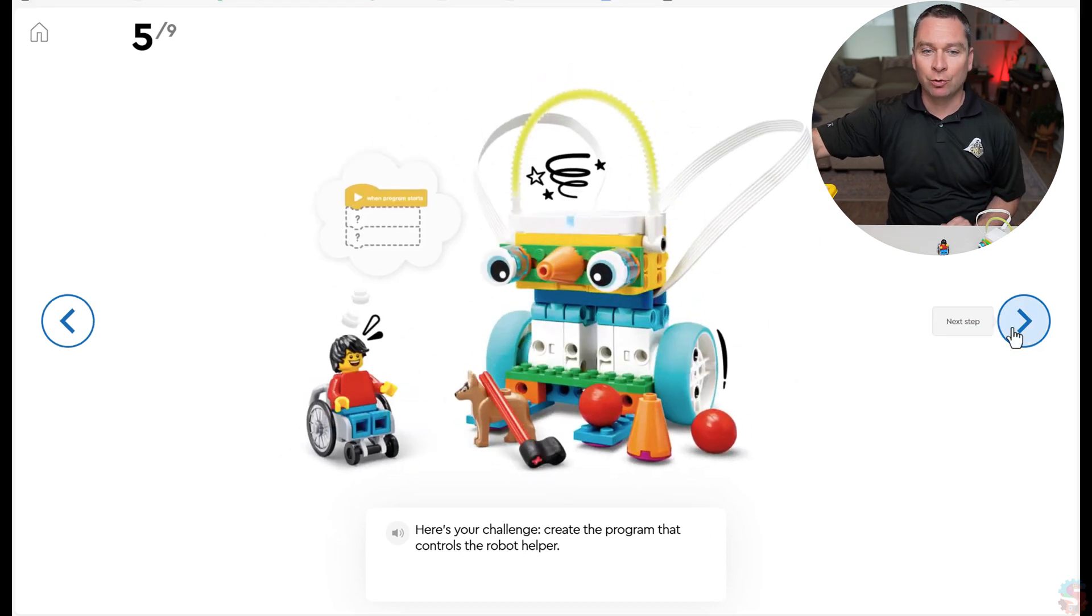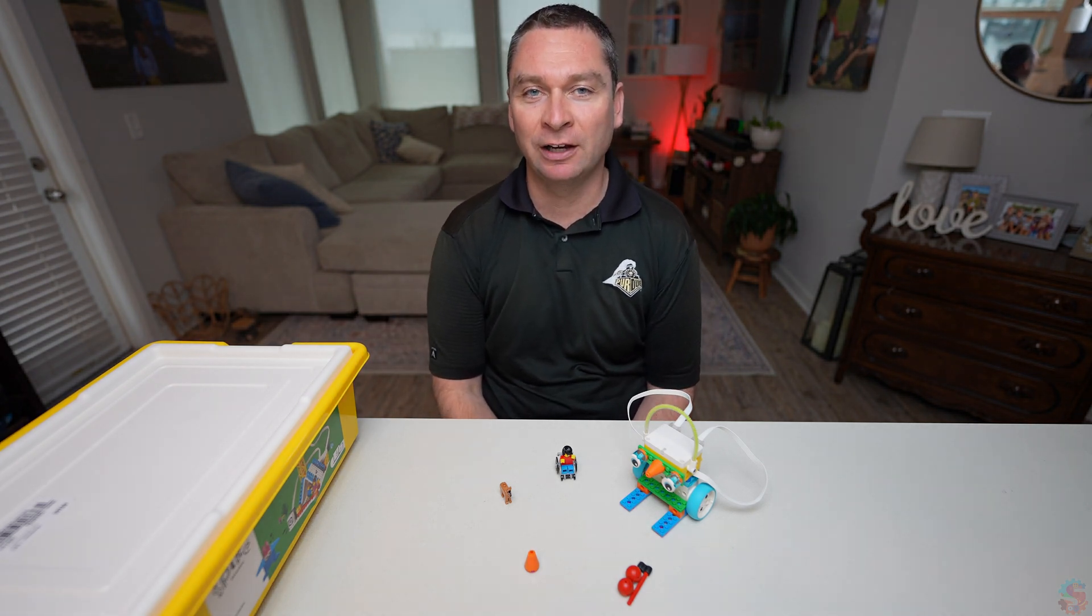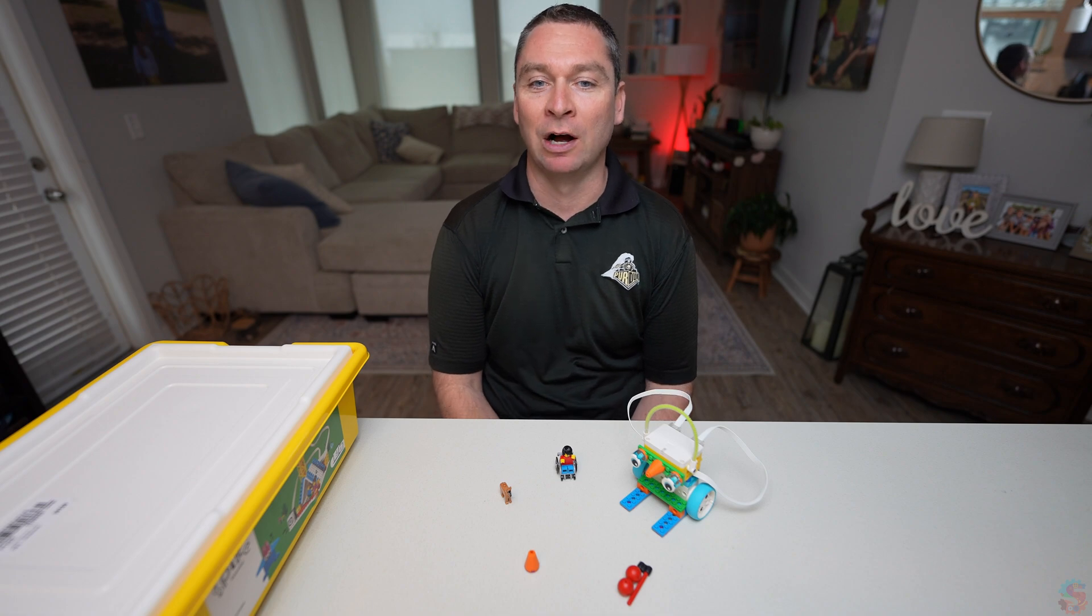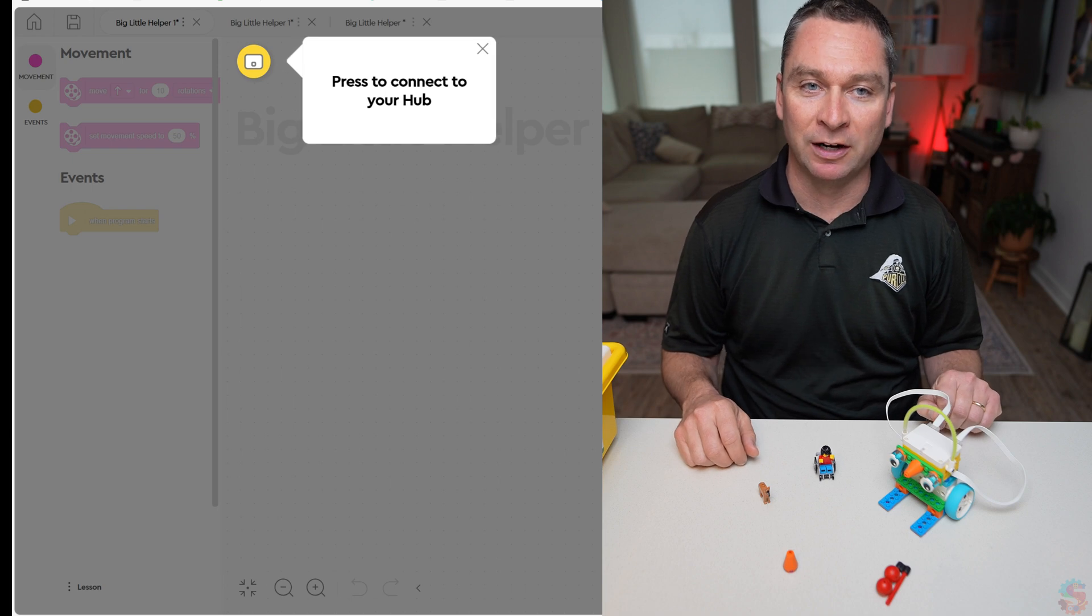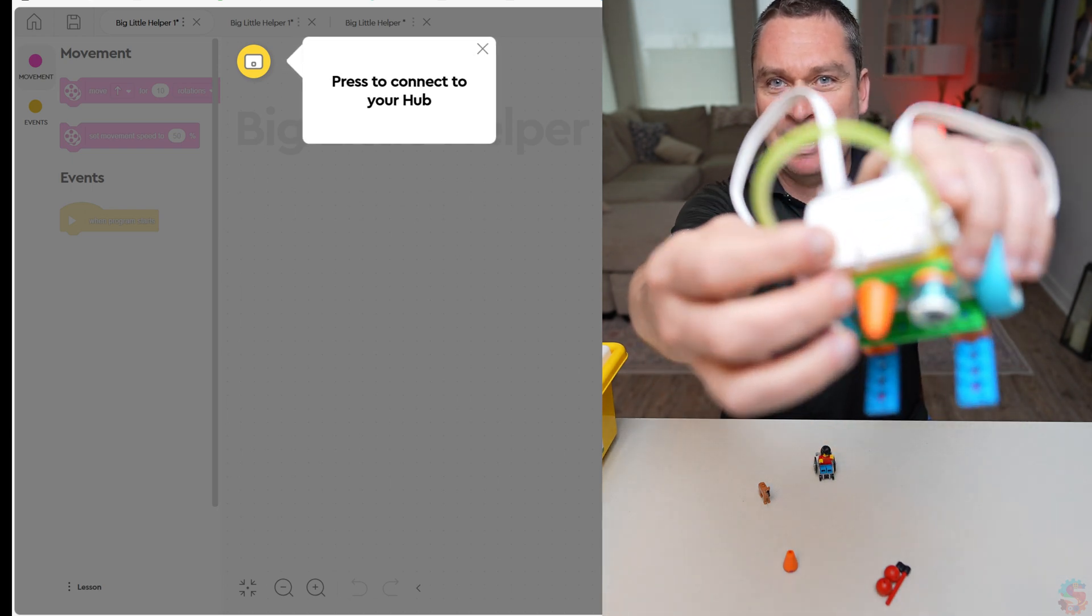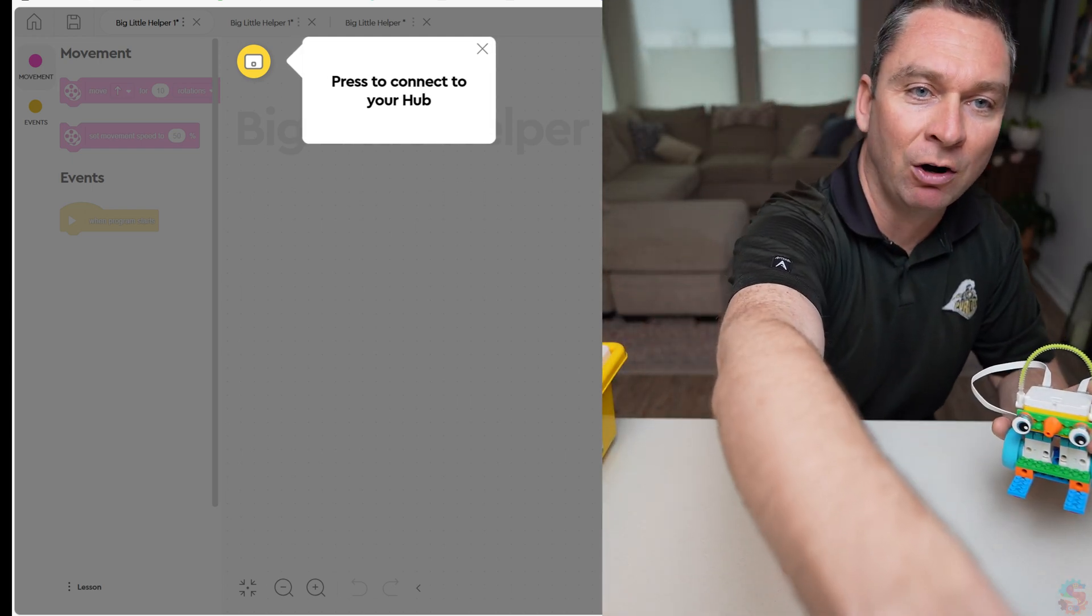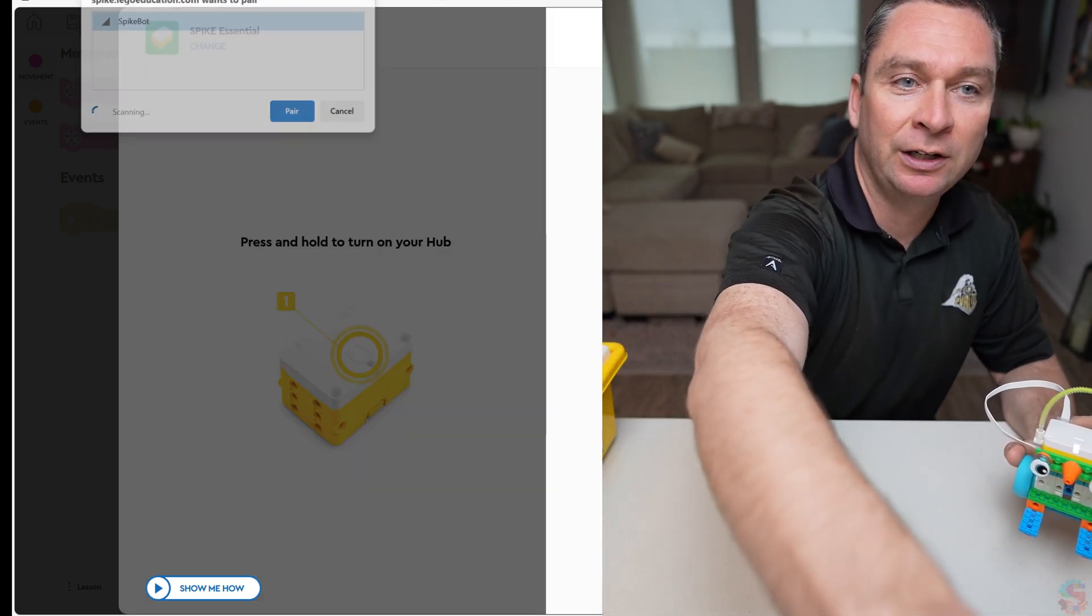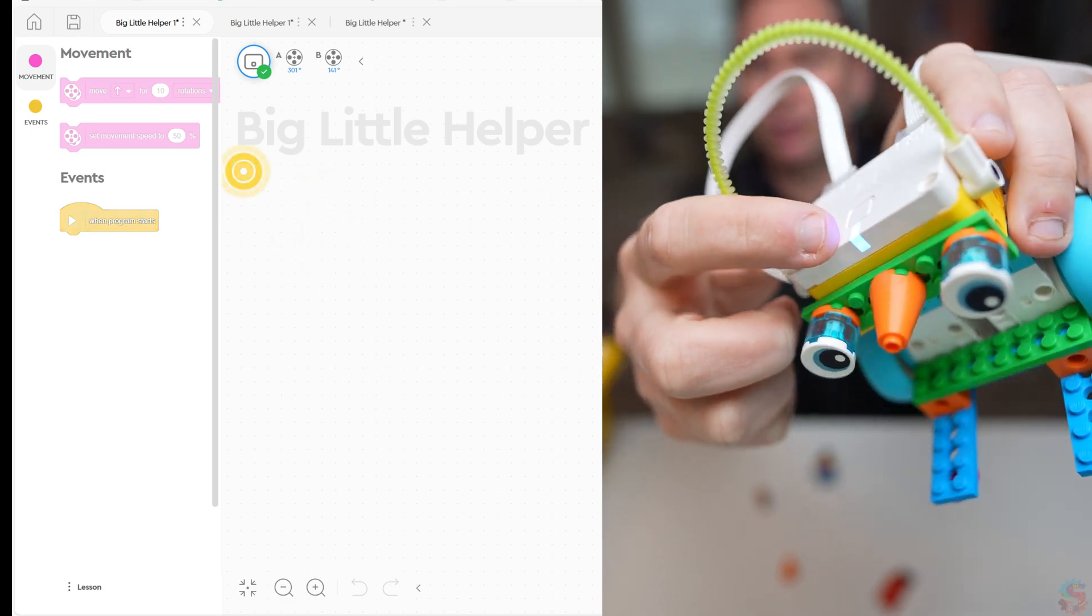Here's our challenge. We're going to create a program that controls the robot helper. I'm going to show you two different ways that we can create these programs. One is going to use word blocks, and then if you're brand new to Spike Essential, I'm going to show you how you can access icon blocks as well to make this robot move. We need to start by connecting our hub to our computer. You've got a button right on top of this robot. If you press that button, it'll start to flash. Now on your screen, you're going to press that yellow circle. Find your robot on the screen and click on pair. You'll know this is working correctly when this light on your robot turns blue.